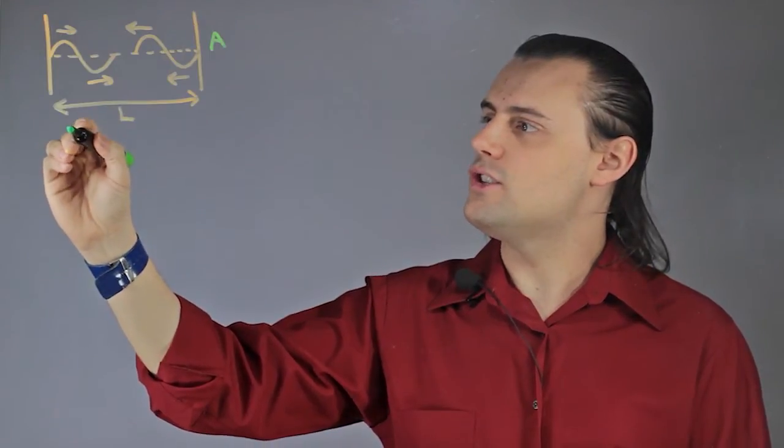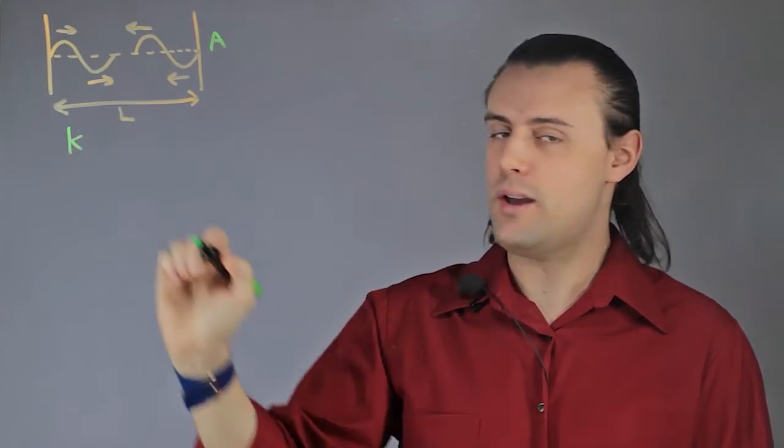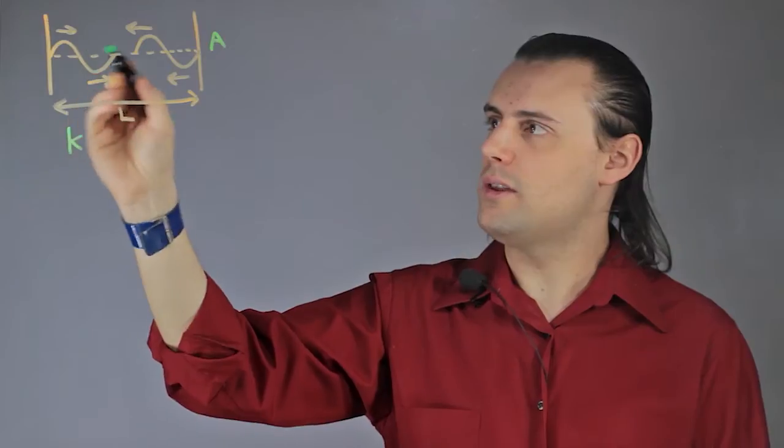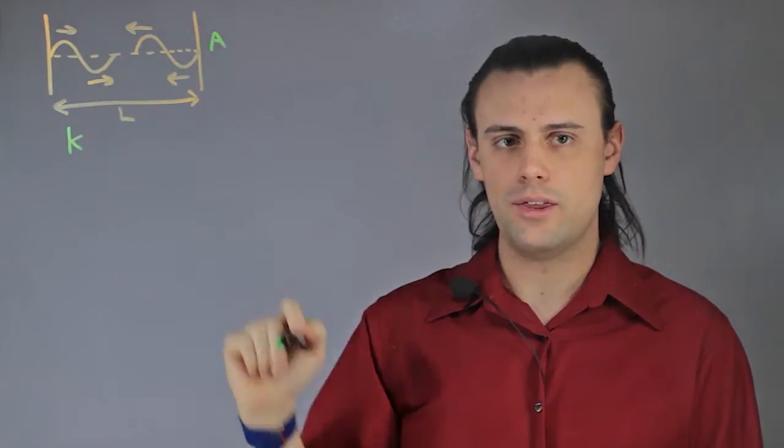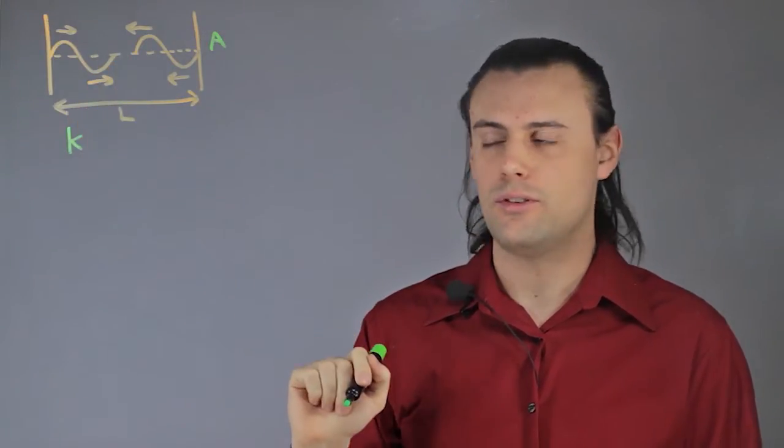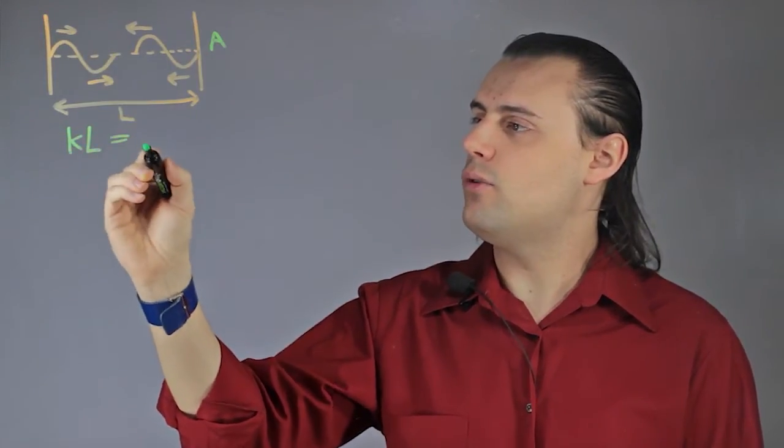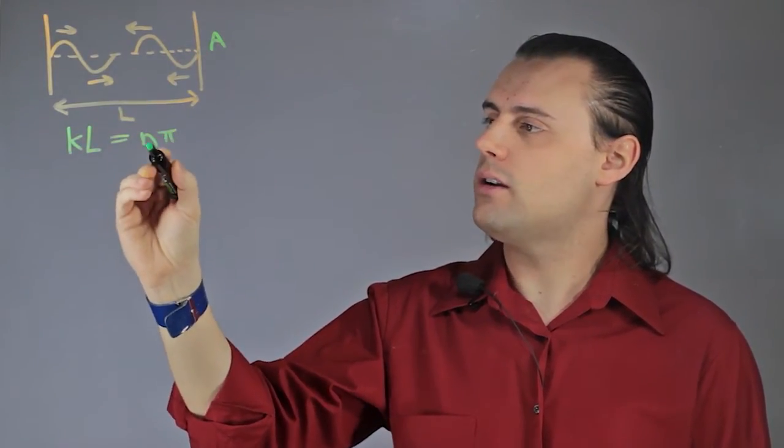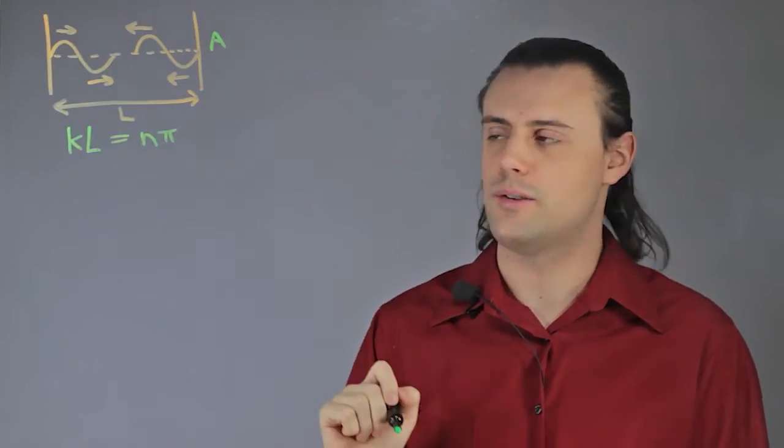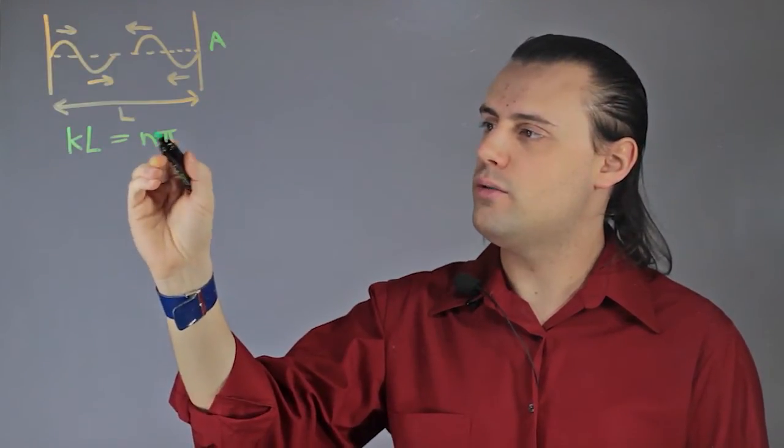The resonance condition would be given by k, the wave number. So we're assuming that these waves have the same wavelength, or in other words the same frequency, times the length is equal to nπ, where lowercase n is an integer. This would correspond to the mode number.